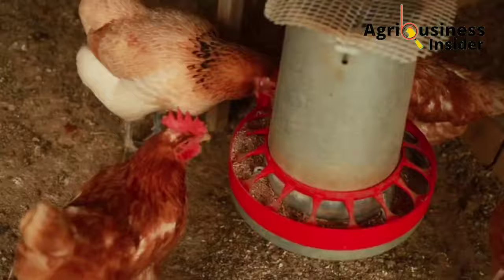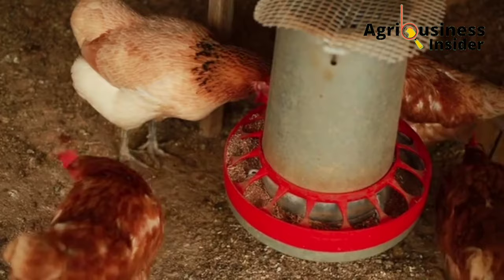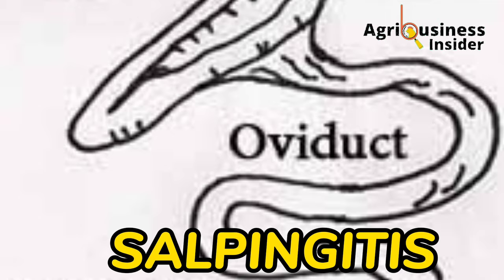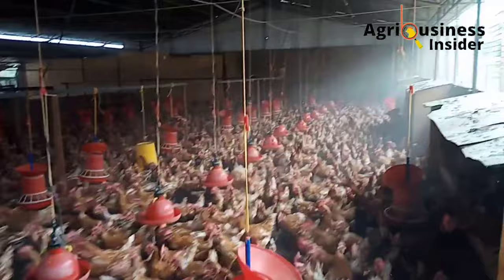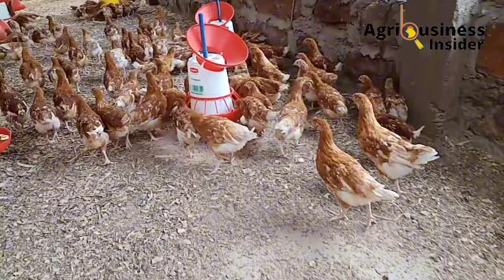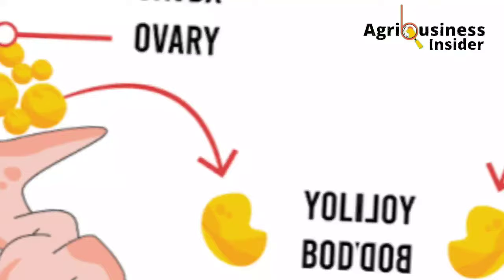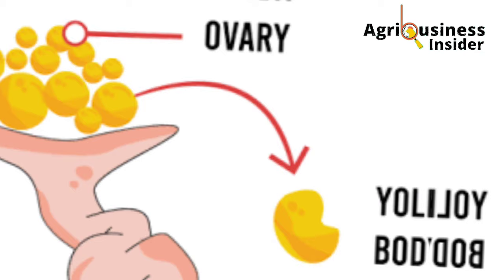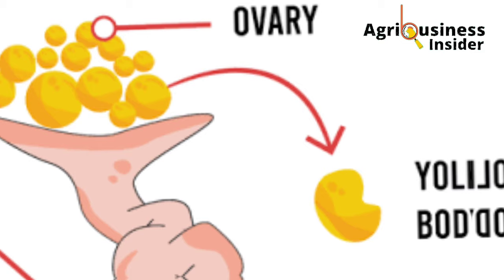One cause that makes the egg yolk miss the oviduct and fall into the abdomen is salpingitis — the inflammation of the oviduct. This inflammation can be due to bacterial infection, and what it does is cause swelling of the oviduct, preventing the egg yolk produced from the ovary from getting into the reproductive system.